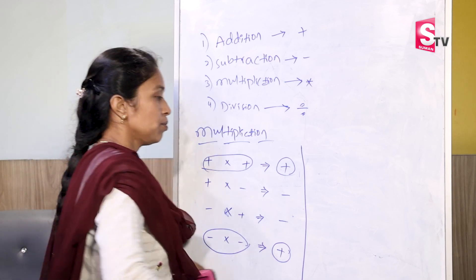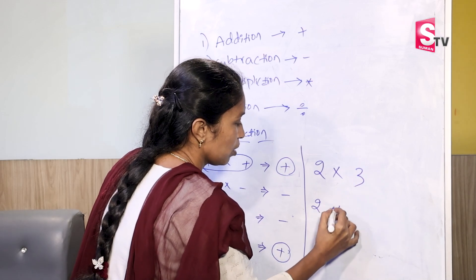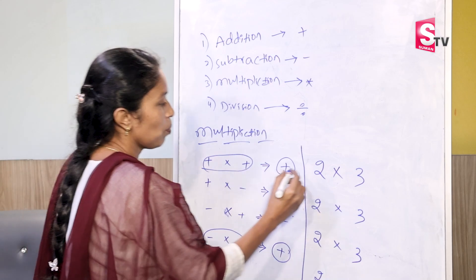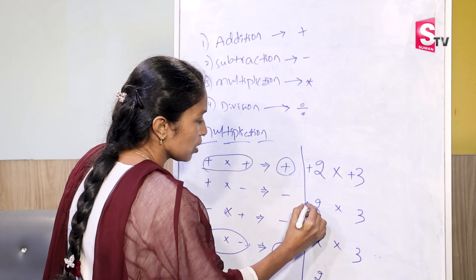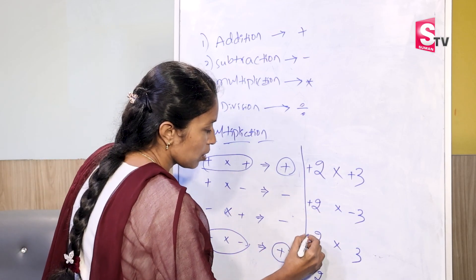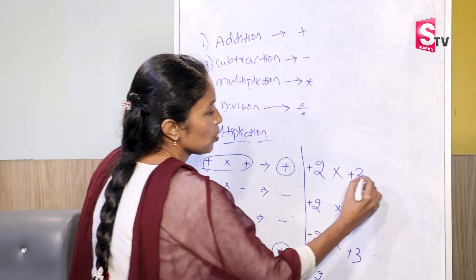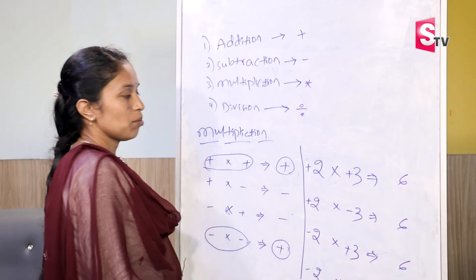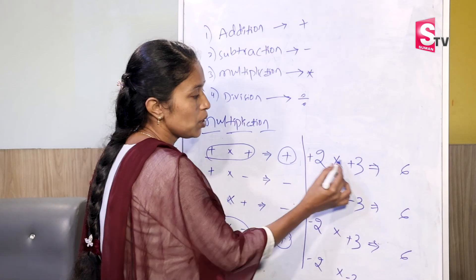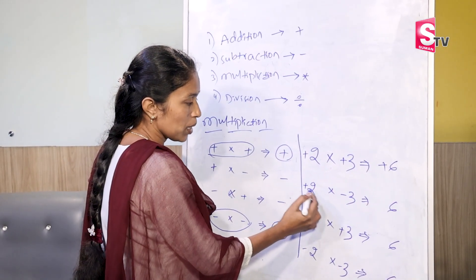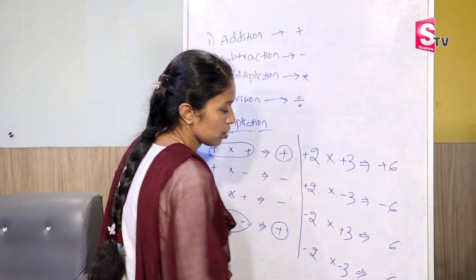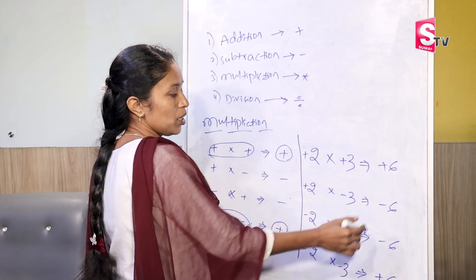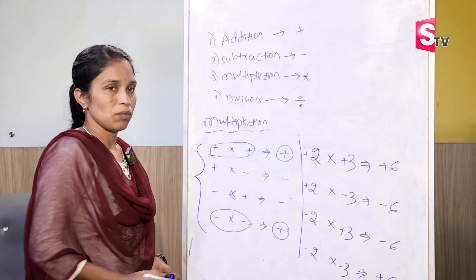We will look at an example with all 4 multiplications using 2 into 3. Plus into plus: the answer is plus 6. Plus into minus: the answer is minus 6. Minus into plus: the answer is minus 6. Minus into minus: same signs give plus, so the answer is plus 6. The sign is very important — same signs give plus, different signs give minus. This is how we do multiplication.